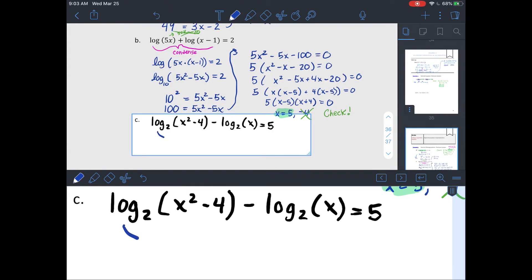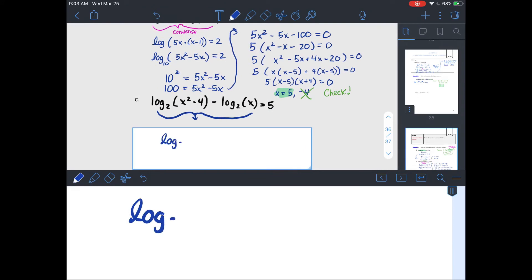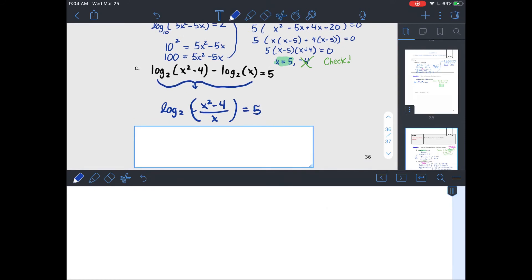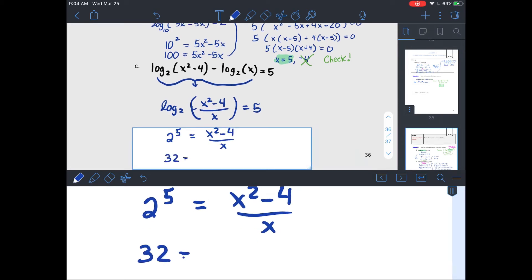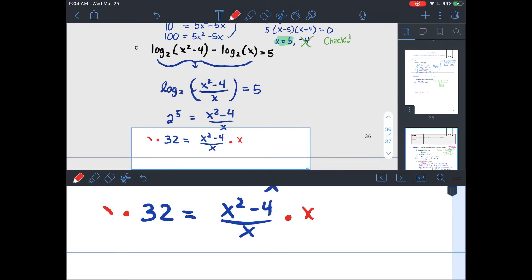Okay, one more because it's good to do a refresher of the quadratic formula. So same situation except it's subtraction. So when I condense these back together, it needs to be x squared minus 4 divided by x inside my logarithm. So if you rewrite that in exponential form, 2 to the 5th equals the inside. Since it's all over x being divided by x, let's multiply both sides by x. After I turn that into 32, it is. So I'll have 32x equals my x squared minus 4.